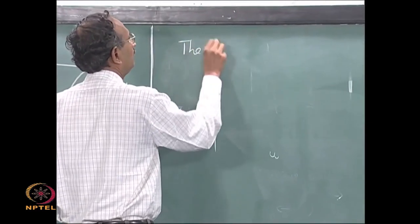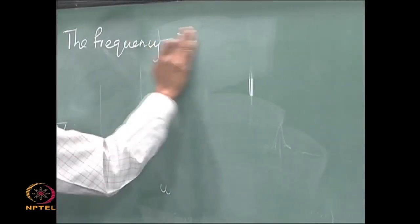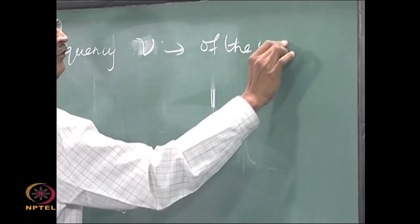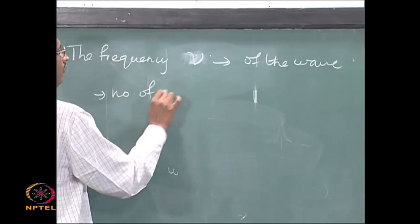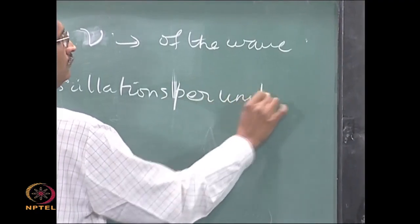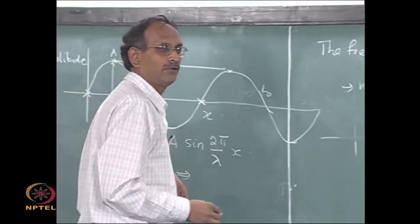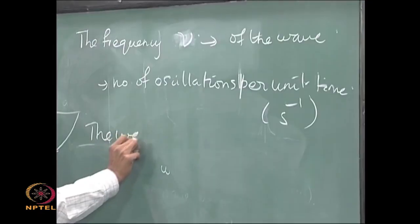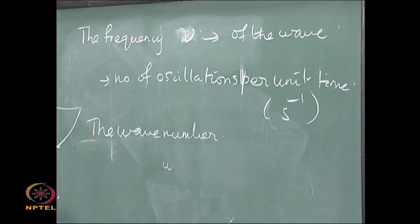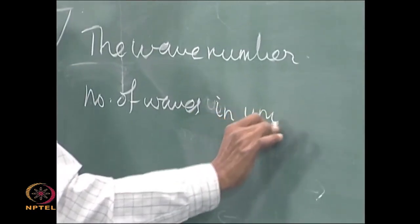The frequency ν of a wave is the number of oscillations in unit time — usually per second. The wave number is defined as the number of waves in unit length.